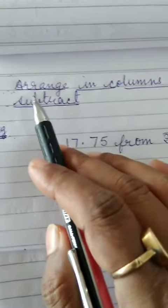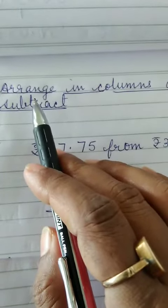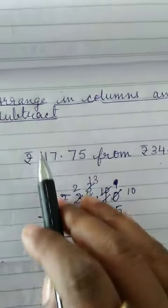Good morning children. Today we will do worksheet 7 question number 2, that is arrange in columns and subtract.